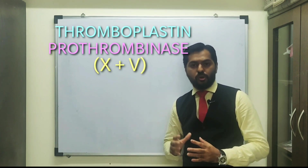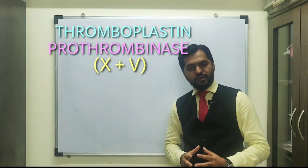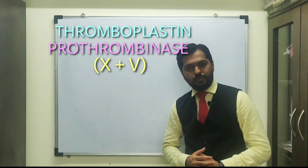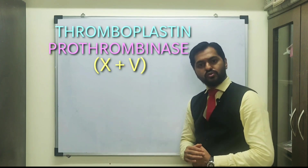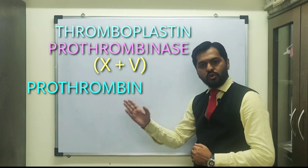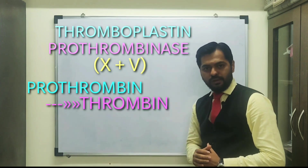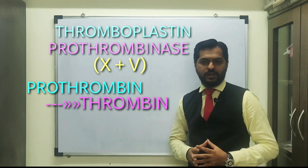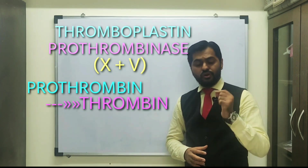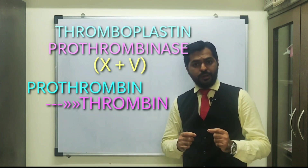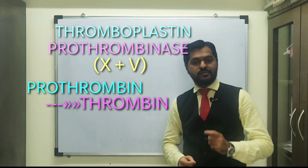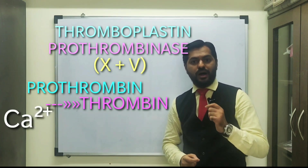Prothrombinase mainly helps in conversion of an inactive plasma protein known as prothrombin, which is converted into thrombin. Thrombin is the activated form. This conversion also requires a very important mineral — calcium ions.